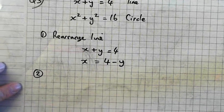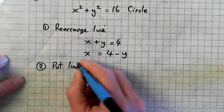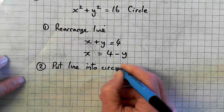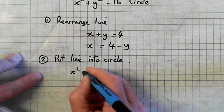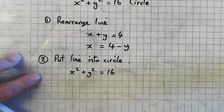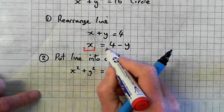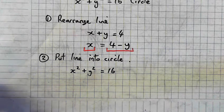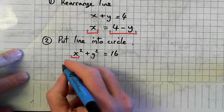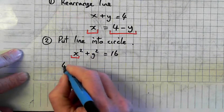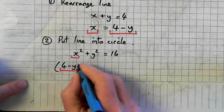So we're on to step two. Step two, place or put line equation into circle equation. So we write down the circle equation again. And what do we do? Where we see x, we put in 4 minus y. Sorry, 4 minus y. Square.